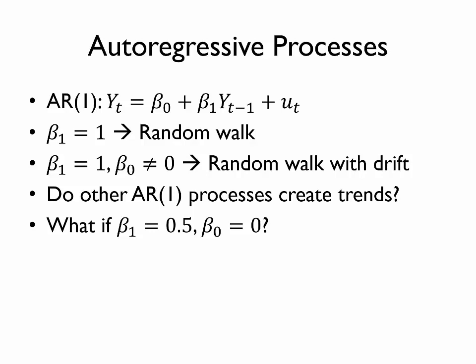So one question we might ask is whether other AR(1) processes also create trends. So for example, if we were to set beta 1 equal to 0.5 instead of 1 and beta 0 equal to 0, do you think we would see the same types of trends or would we in fact have a stationary process? So I'll show a simulation of this process in just a moment, but first let's see if we can gain any intuition for what might happen by taking a close look at the formula.